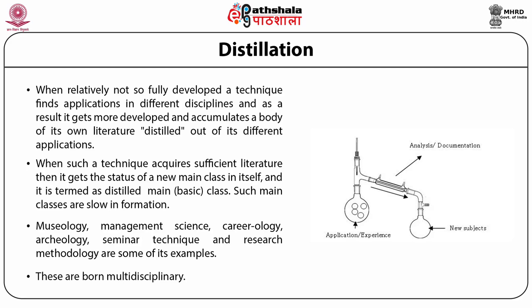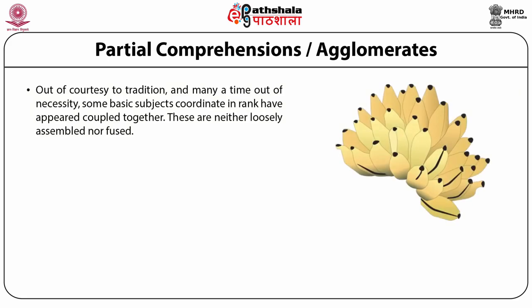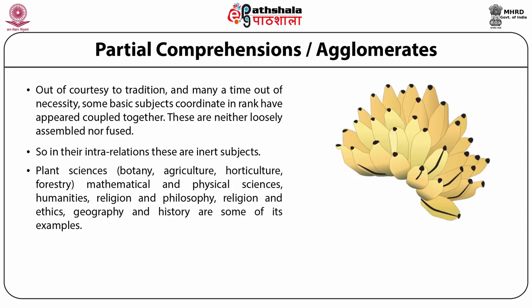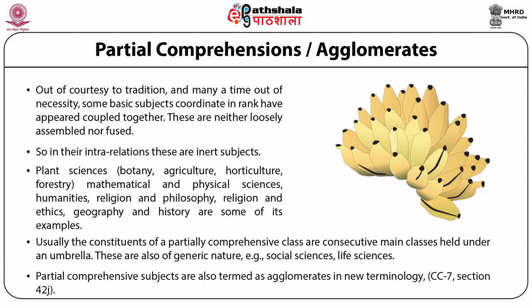Partial comprehensive or agglomerate subjects: Out of cursive tradition and many a time out of necessity, some basic subjects of coordinate rank have appeared coupled together. These are neither loosely assembled nor fused — so in their intra-relations these are inert subjects. Plant Sciences — for example, Botany, Agriculture, Horticulture, Forestry — Mathematical and Physical Sciences, Humanities, Religion and Philosophy, Religion and Ethics, Geography and History are some examples. Usually, the constituents of a partially comprehensive class are coordinate main classes held under an umbrella. These are also of generic nature — for example, social sciences or life sciences. Partial comprehensive subjects are also termed as agglomerates in the new terminology in the 7th edition of the Colon Classification.